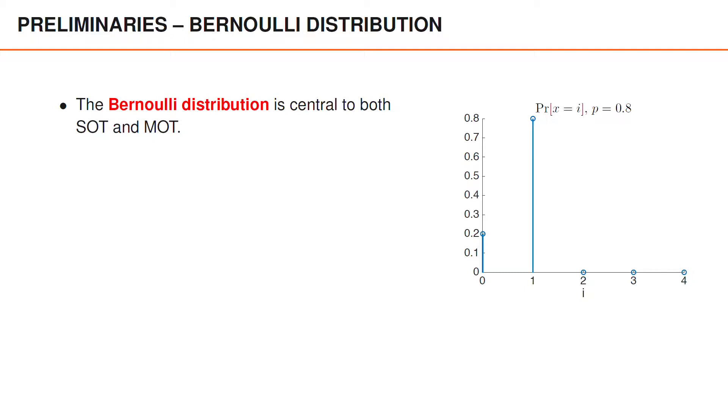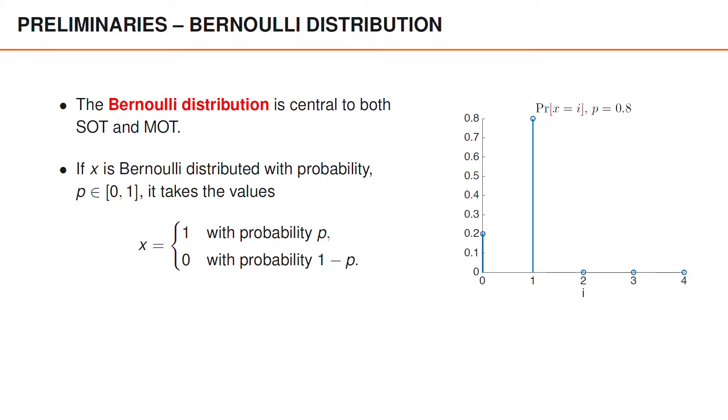The Bernoulli distribution is one such example, since that is used to describe the measurement model in single object tracking. A Bernoulli distribution can be used to represent, for instance, the successfulness of an experiment, where 1 means that it was successful and 0 means that it failed. It could also be used to represent the outcome when you toss a possibly biased coin, where x equals 1 means heads and x equals 0 means tails. Importantly, it can also be used to represent the event of a detection, where x equals 1 indicates that the object is detected, and x equals 0 means that the object is not detected. The Bernoulli distribution is actually central to both single object tracking and multi-object tracking, and will be used to model several different aspects in upcoming weeks.